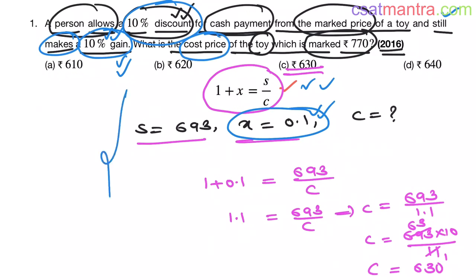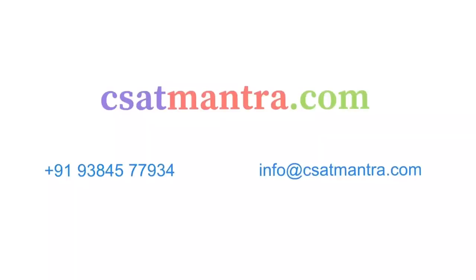If you know the background of this formula, it won't take more than 10 seconds to solve this problem. Any problem from profit and loss can be solved using this single formula — you should not think anything beyond it. This is the same with averages, sequences and series, interest, and other chapters. To know more about our course, kindly visit csatmantra.com. If you have any queries, feel free to call us or mail us. Thank you.